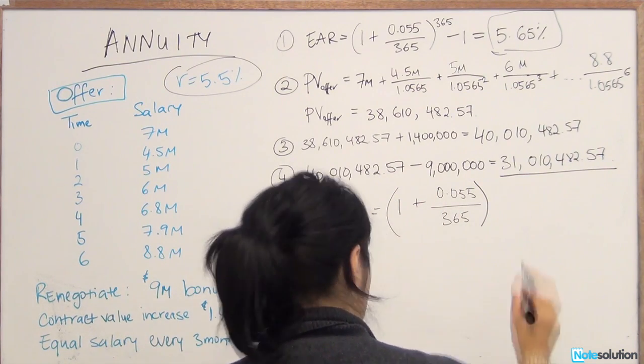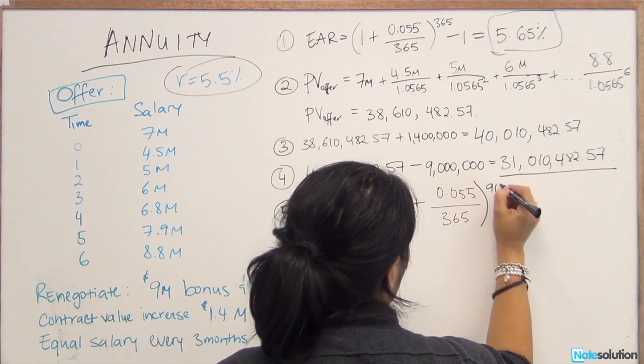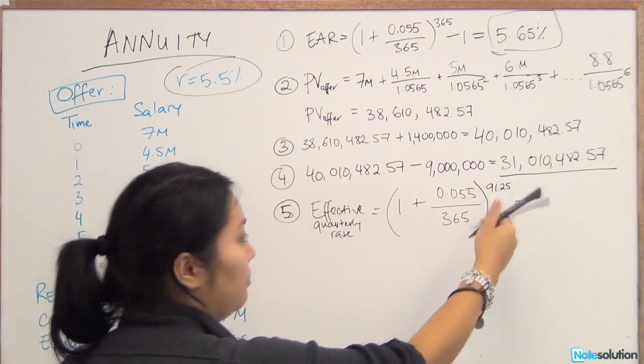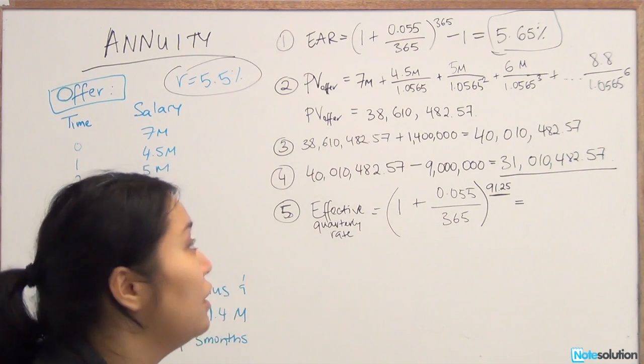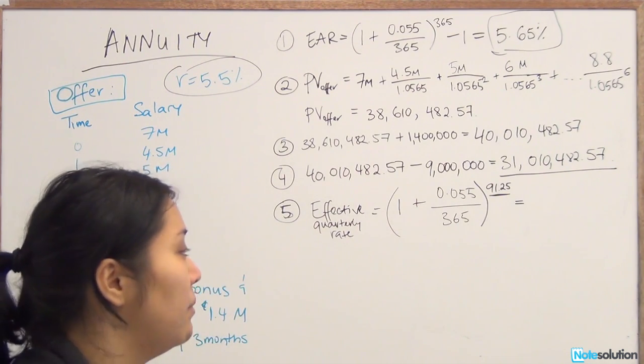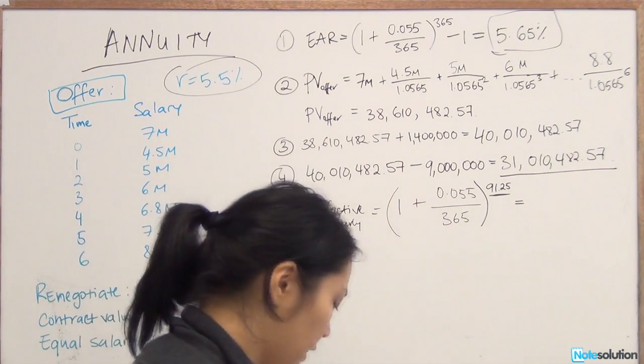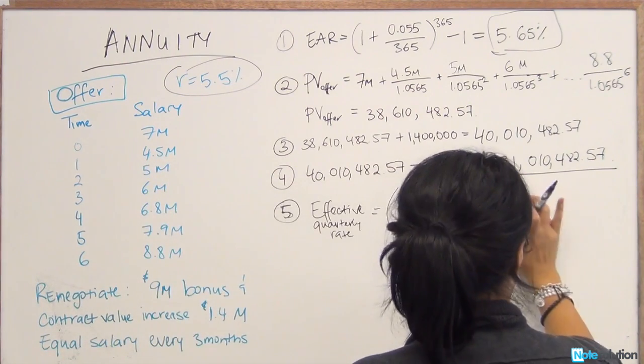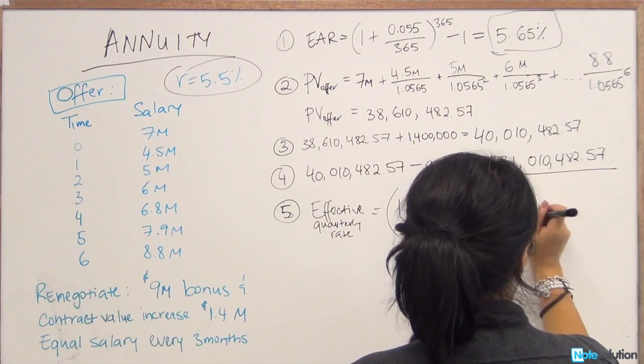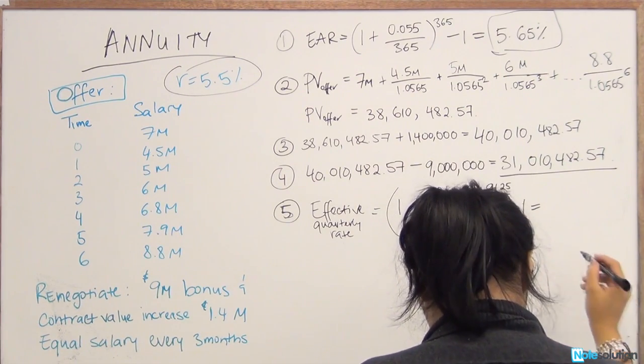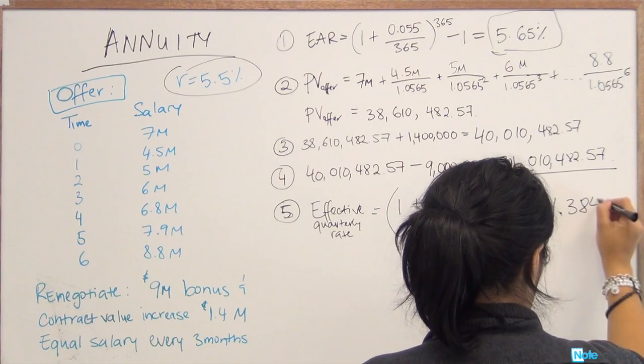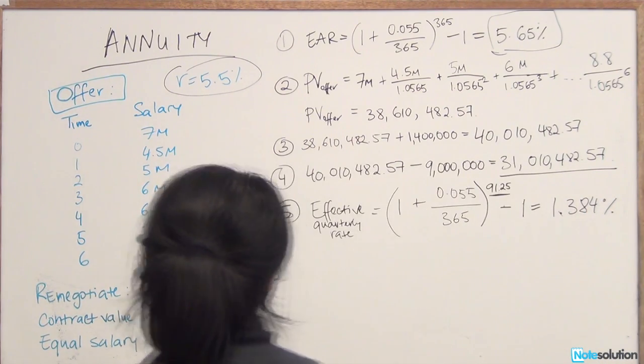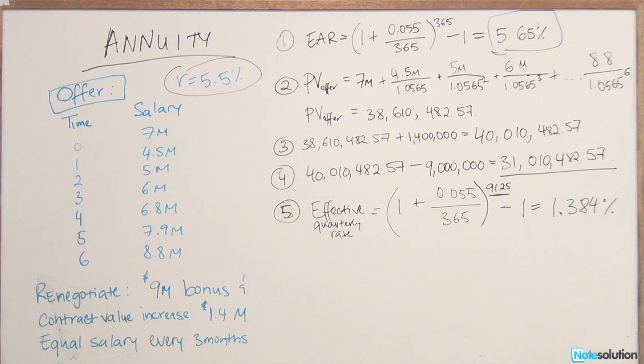And we're going to take it to the power of 91.25. So that's just the number of days in each quarter. So we know that the number of days in the year is 365 divided by 4, we get 91.25. So our effective quarterly rate is 1.384%.